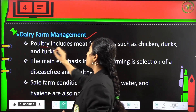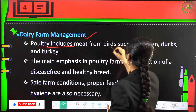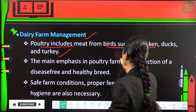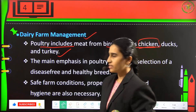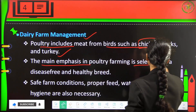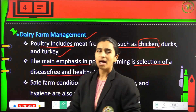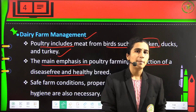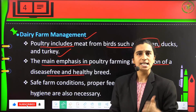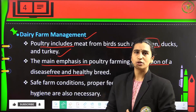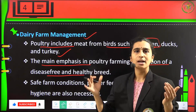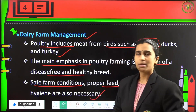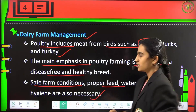Poultry farming includes meat from birds like chicken, ducks, and turkey — the most commonly consumed meats. The main emphasis in poultry farming is the selection of disease-free and healthy breeds. Whether it is dairy farming or poultry farming, the most important thing is a disease-resistant breed. Safe farm conditions, proper feed, water, and hygiene are very important for poultry farm management.